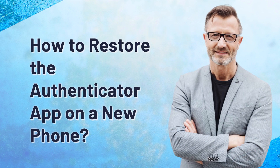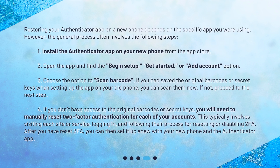How to restore the Authenticator app on a new phone? Restoring your Authenticator app depends on the specific app you were using. However, the general process often involves the following steps. First, install the Authenticator app on your new phone from the App Store. Second, open the app and find the 'Begin Setup', 'Get Started', or 'Add Account' option. Third, choose the option to 'Scan Barcode'. If you had saved the original barcodes or secret keys when setting up the app on your old phone, you can scan them now. If not, proceed to the next step.